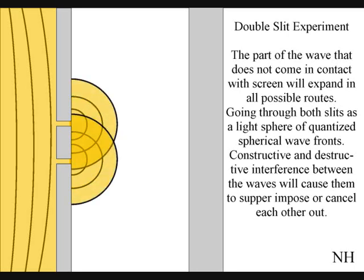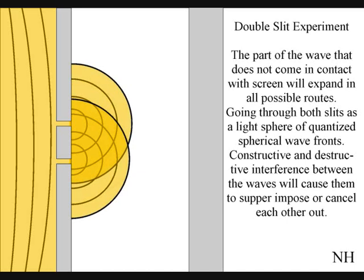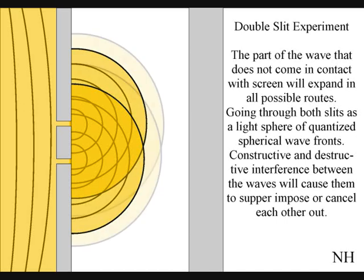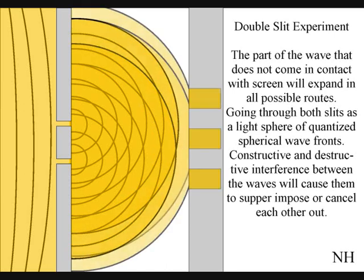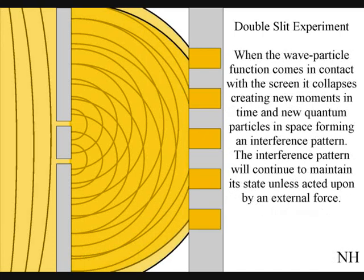The part of the wave that does not come in contact with the screen will expand in all possible routes, going through both slits as two light spheres of quantized wavefronts. Constructive and destructive interference between the waves will cause them to superimpose or cancel each other out. When this wave-particle function comes in contact with the screen, it will collapse, creating moments in time and quantum particles in the shape of an interference pattern.